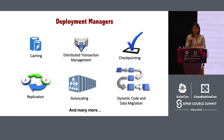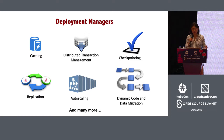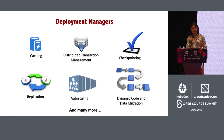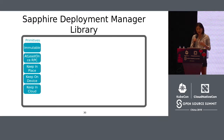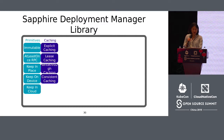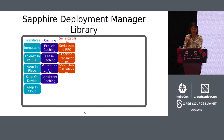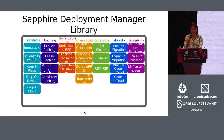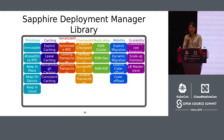We've built a fairly extensive library of stock deployment managers that application programmers can use or modify. You can also combine them by chaining deployment managers. We have many categories: primitive deployment tasks like exactly-once RPC, caching, serializability, checkpointing, replication, mobility, scalability, and more. There are a very large set of these library deployment managers already, with more to come.